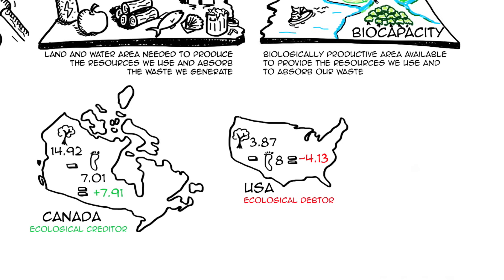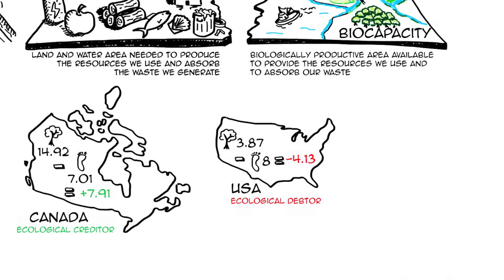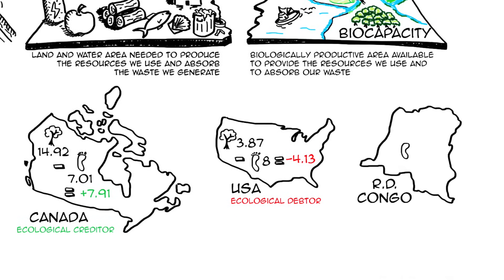Among the smaller footprints is the Democratic Republic of the Congo with 0.75. Although it's not an economically rich country at all, it has a biocapacity of 2.76, so it is also an ecological creditor country with a difference of 2.01.